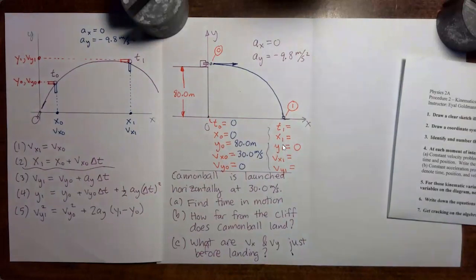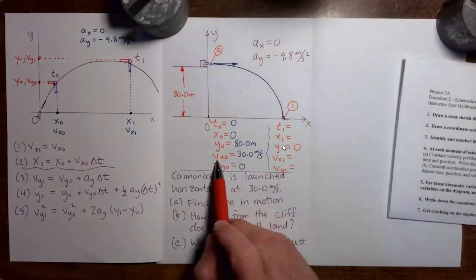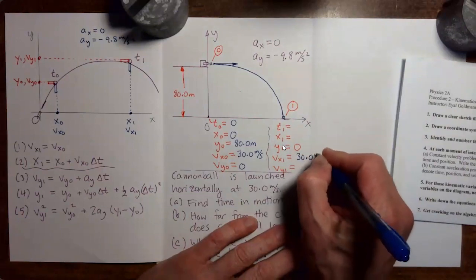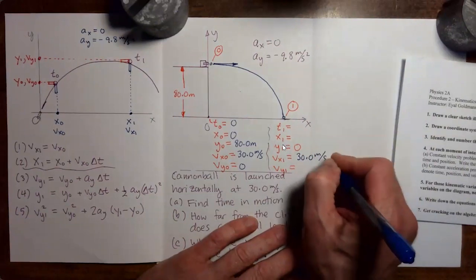We also know that the x velocity is constant. The acceleration is only in the y direction. So if vx zero is 30 meters per second, then vx one also 30 meters per second, and vy one we're going to have to figure out later.